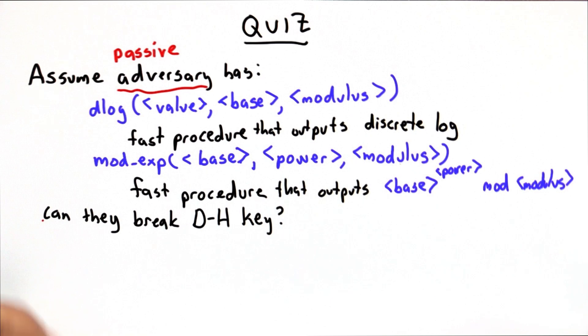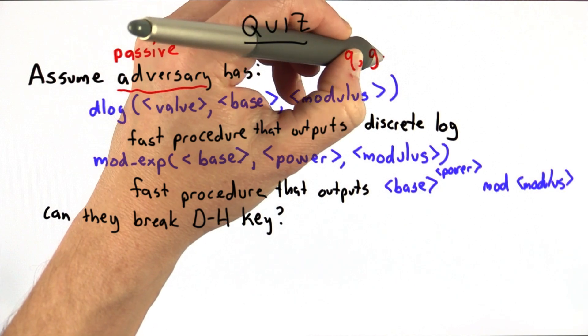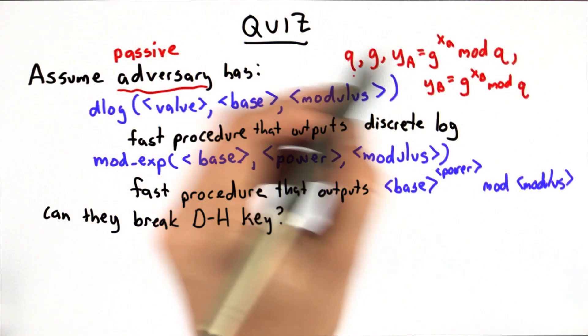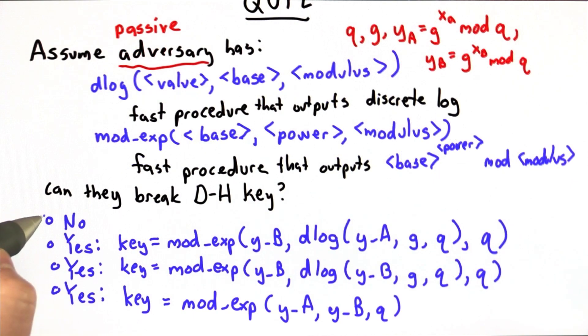And now the question is, can they break a Diffie-Hellman key? So we're assuming that they're a passive attacker. So they've eavesdropped on all the messages between Alice and Bob. So they have all these values that were sent over the secure channel. And the possible answers are no, that it's impossible with no more resources or information. Or that yes, there is a way to do it, and here's the way that she would compute that.